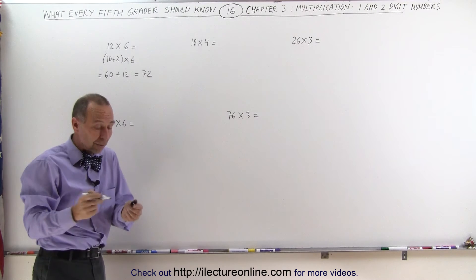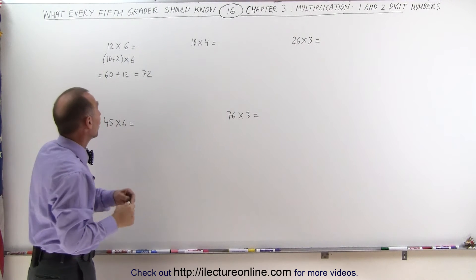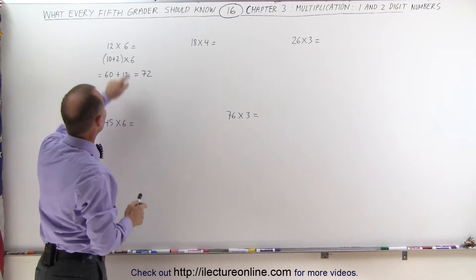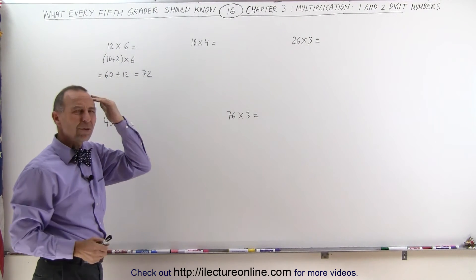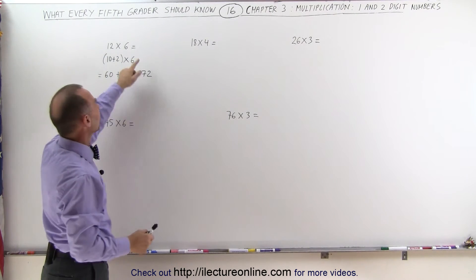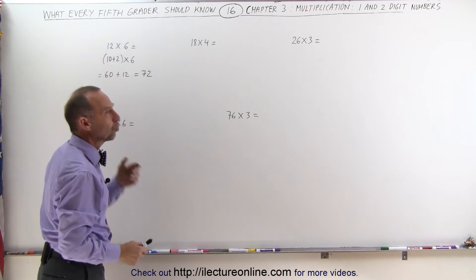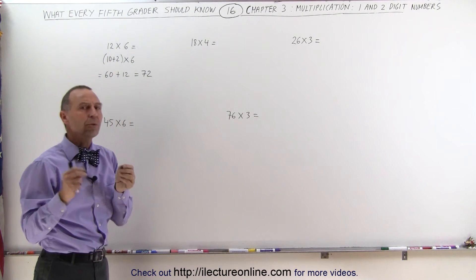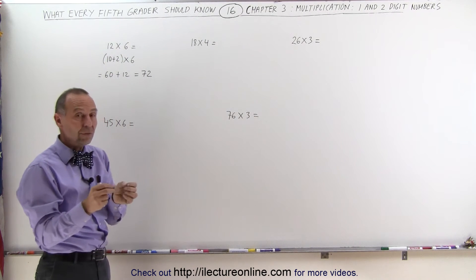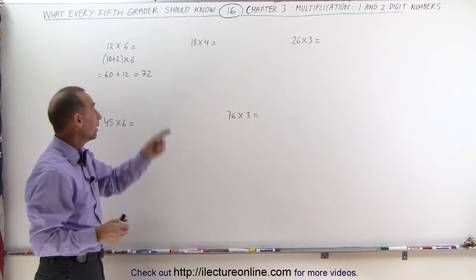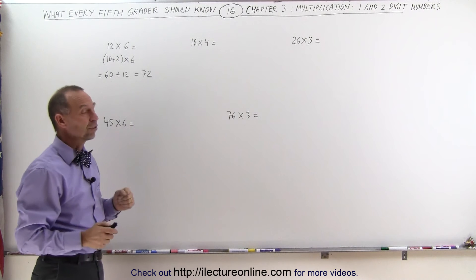So the way we look at a number like that, we go: 6 times 10, that's 60 — remember the 60. 6 times 2 is 12 — remember the 12. 60 plus 12 is 72. And that's my answer.